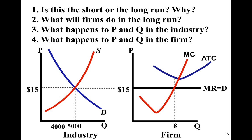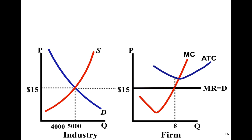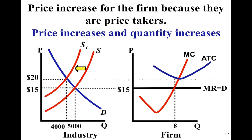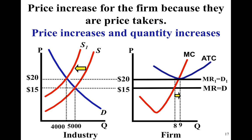This is the opposite scenario — firms making a loss. That gold area represents losses. When there are losses, firms will leave the industry, resulting in higher prices. A higher price for the industry means a higher price for the firm, and those firms that are able to stick it out will see their losses go away and return to a scenario of normal economic profit — long-run equilibrium.